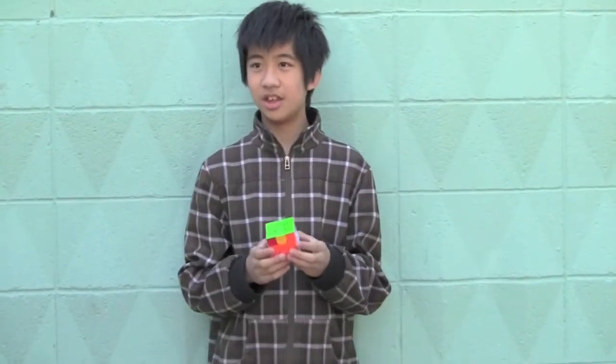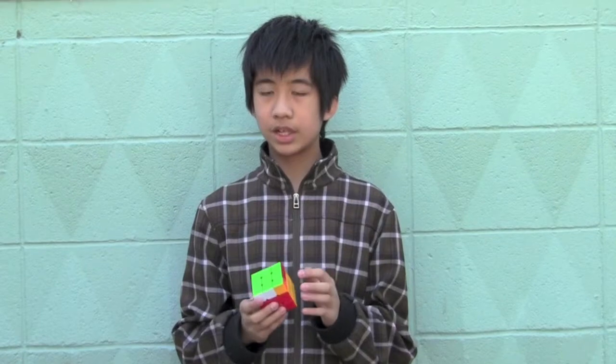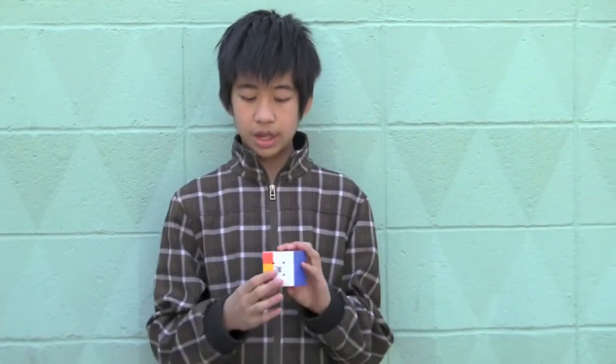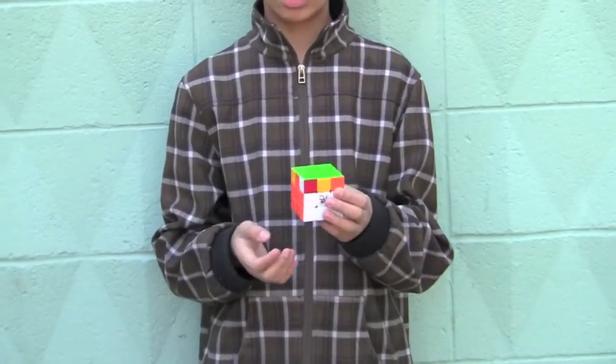So this is PLL. The first step of PLL is to get headlights. Headlights are two completed corners on the top face of the cube. As you can see, this does not have headlights, so that's why you use this algorithm.